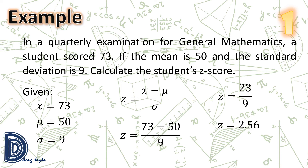If the z-score is positive, the score is above the mean. If the z-score is negative, the score is below the mean. And if the z-score is 0, then the score is equal to the mean.